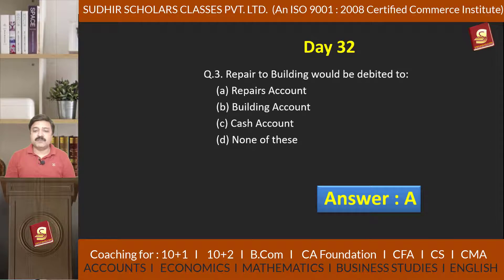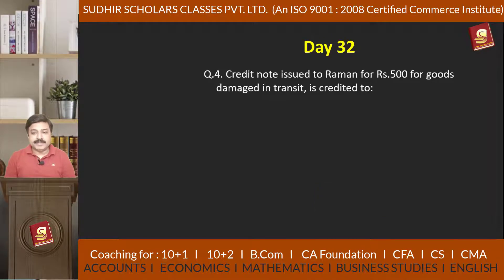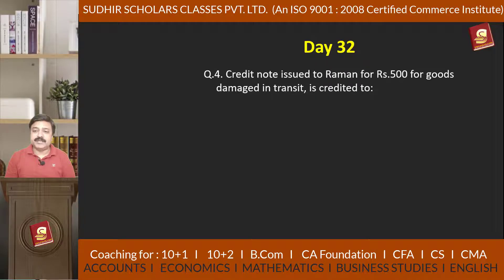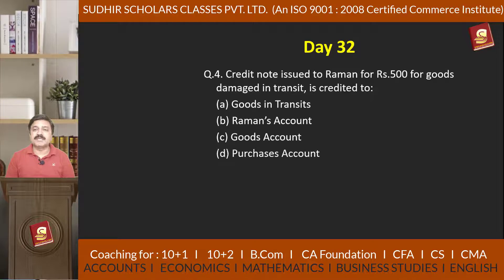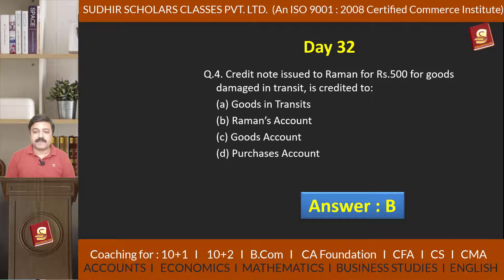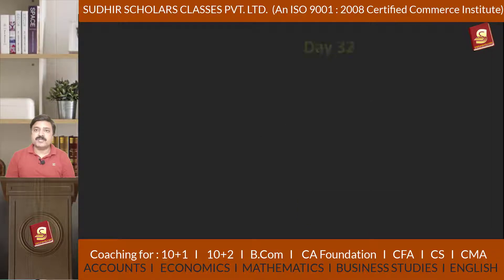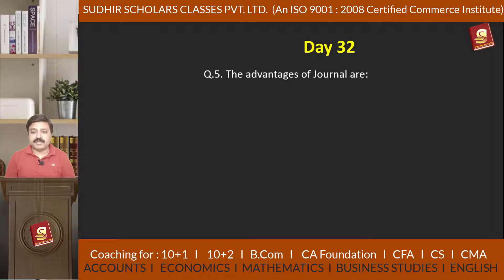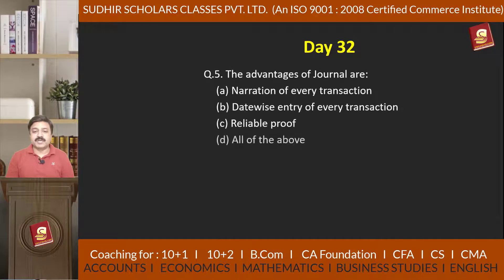Question number 4: Credit note issued to Raman for 4,500 for goods damaged in transit — we have 4 options, and the right answer is option B: Raman's account. Question number 5: The advantages of journal — 4 options, and the right answer is option D: All of the above.